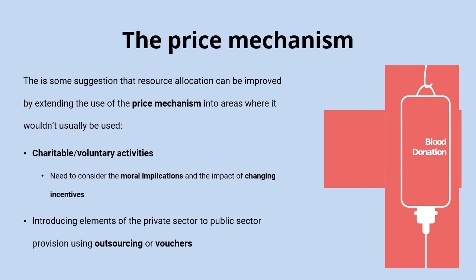There are other areas where goods and services traditionally provided by the government might use elements of the price mechanism to increase efficiency. Infrastructure projects are often outsourced to private companies, even though they're still paid for with public funds. Welfare support such as free meals might be provided using vouchers instead — so the market mechanism provides the goods and services, but the payment for them comes from the government.